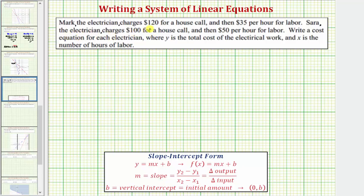Mark, the electrician, charges $120 for a house call and then $35 per hour for labor. Sarah, the electrician, charges $100 for a house call and then $50 per hour for labor. Write a cost equation for each electrician where y is the total cost of electrical work and x is the number of hours of labor.